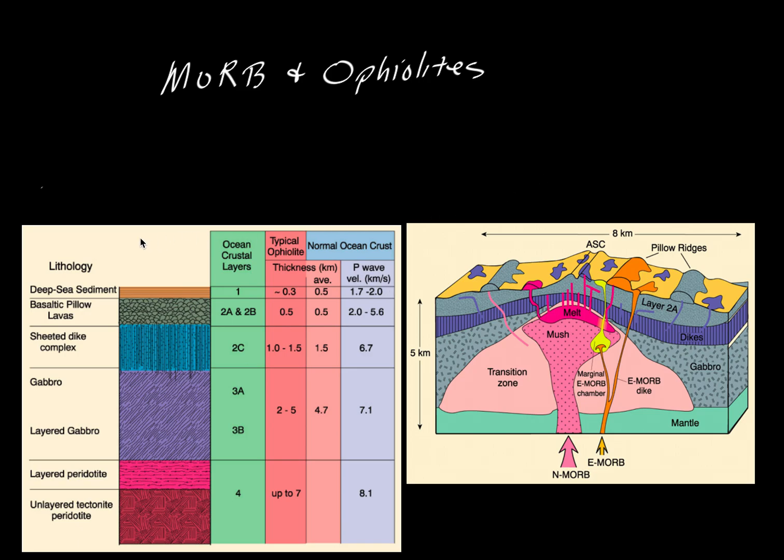Here we're going to use these two very nice diagrams from the textbook by John Winter to show how the mid-ocean ridge basalt region can compare to what we see on continents emplaced as ophiolites and then what we see in the seismic record of the oceanic crust.